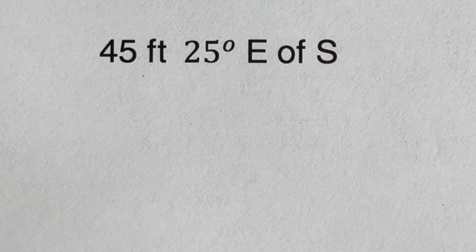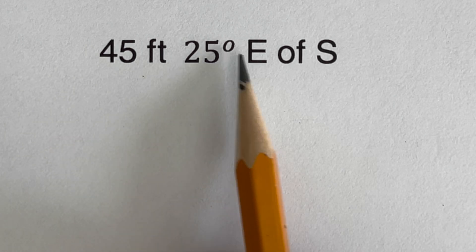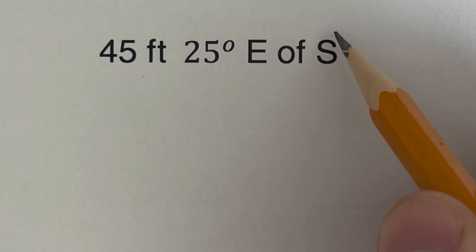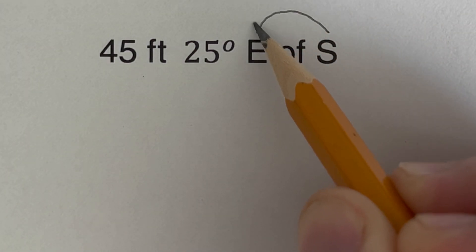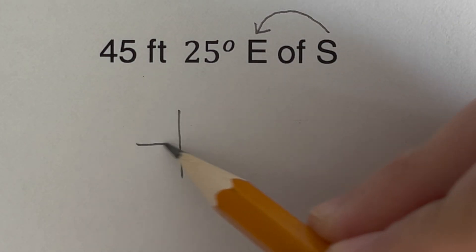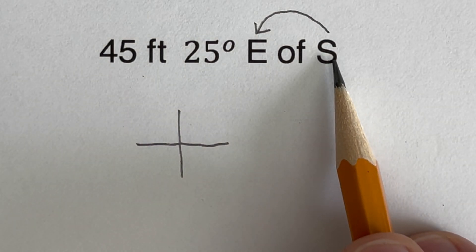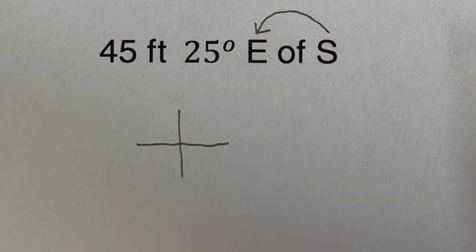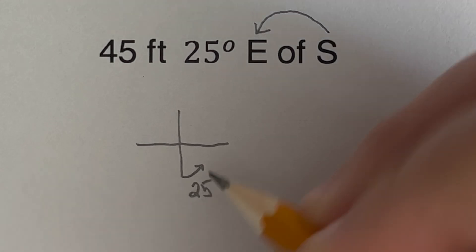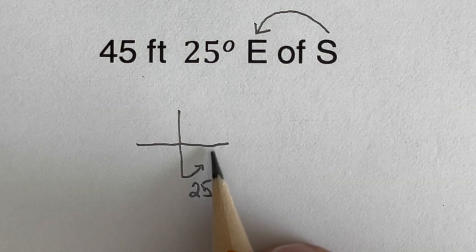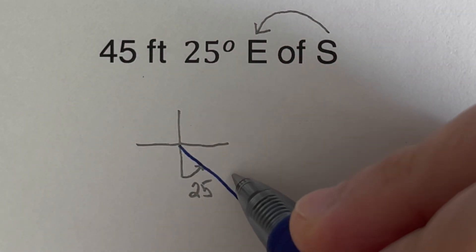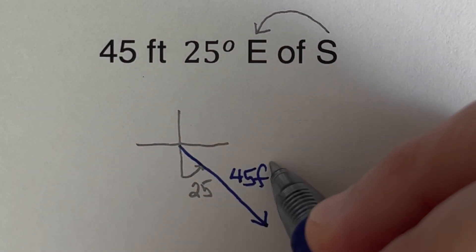The next one says 45 feet 25 degrees east of south. With this notation we start measuring from the south going to the east — we do it in reverse order. Drawing the direction guide, we start from south going to the east at 25 degrees, and this line represents the 45 feet.